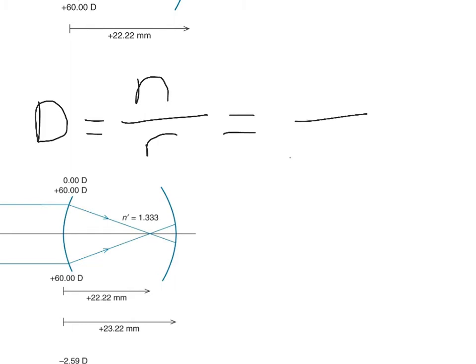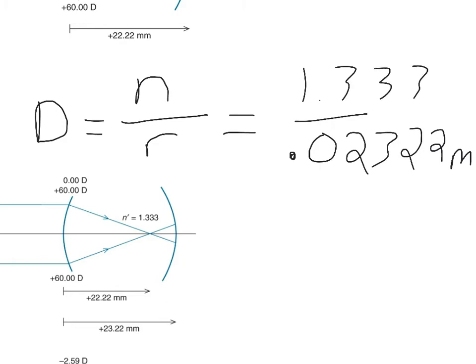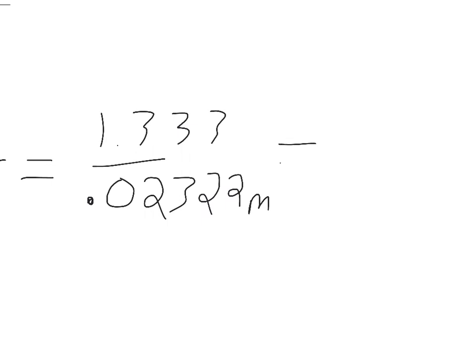The radius is 23.22 millimeters — you have to convert it to meters, so that's 0.02322 meters. Always convert to meters. The index of refraction in this case is 1.333, which goes on top: 1.333 divided by 0.02322. Then you go ahead and solve it, and you get 57.40 diopters.